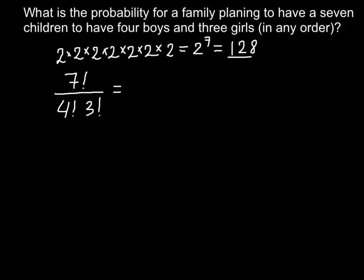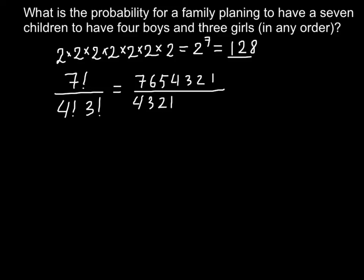What is a factorial? For example, 7! means that we multiply 7 by 6 by 5 by 4 by 3 by 2 by 1 in decreasing order. In the denominator we have the same rule: we multiply 4 by 3 by 2 by 1, and then 3 by 2 by 1.